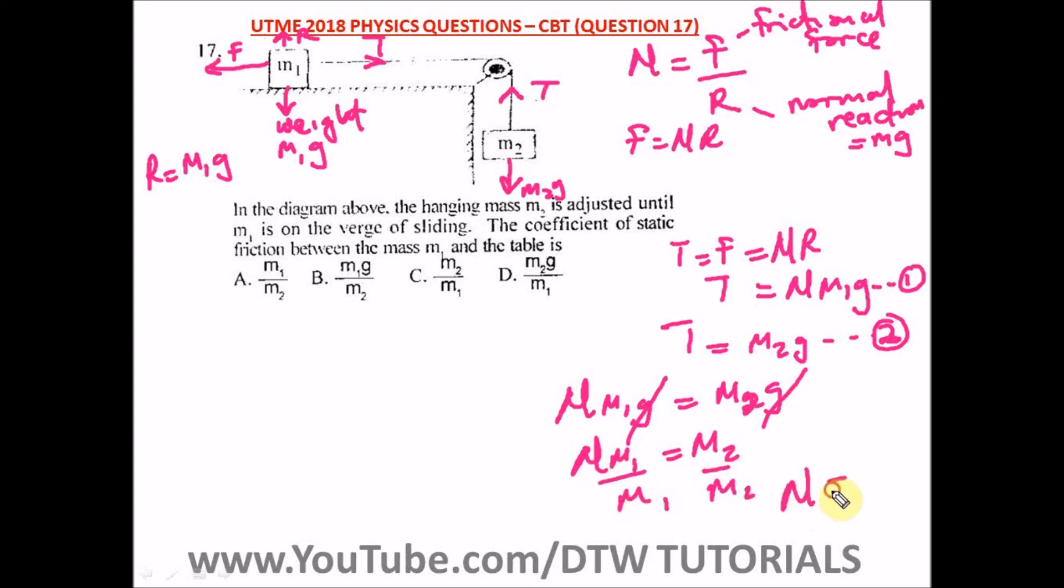So the coefficient of static friction is M2 over M1, that's the second mass over the first mass, and our right option here is option C.